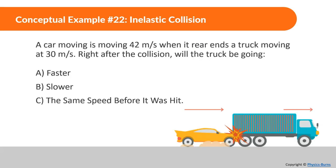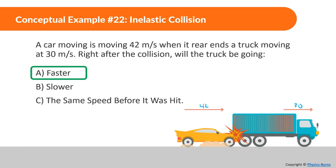Conceptual Example 22: A car is moving at 42 meters per second when it rear-ends a truck moving at 30 meters per second. Right after the collision, will the truck be going A) faster, B) slower, or C) the same speed? The answer is faster — the truck gets a boost from being hit, so it will be going faster than 30 meters per second.